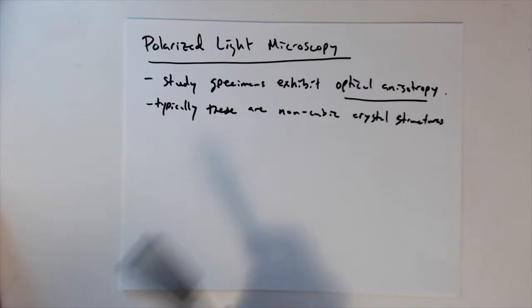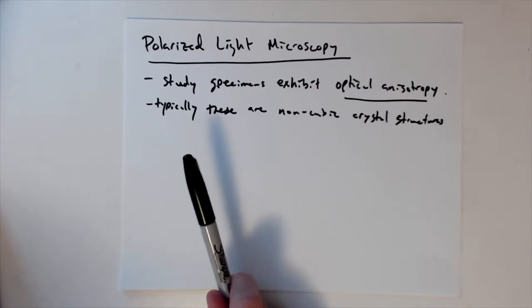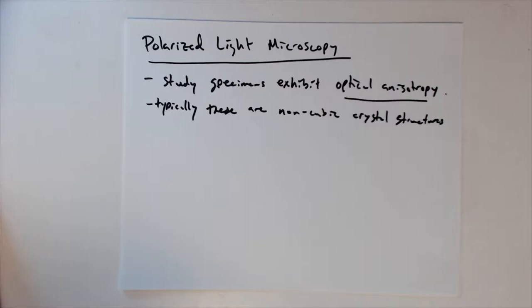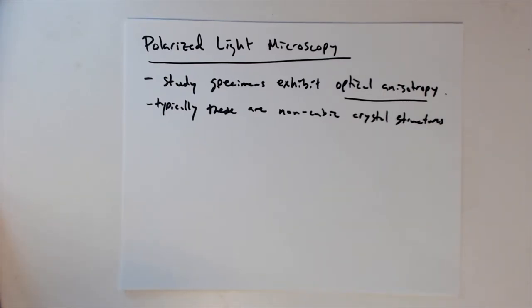Before we get too involved in this, I want you to stop and go to the quiz for a second and see if you can answer the question asking what metals you can think of that are non-cubic. See if you can come up with some examples, and also feel free to add non-metals — ceramics or polymers with non-cubic crystal structures as well.